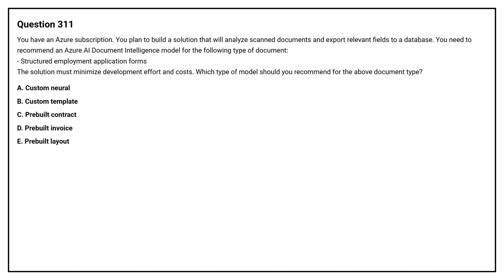Option A: Custom Neural. Option B: Custom Template. Option C: Pre-built Contract. Option D: Pre-built Invoice. Option E: Pre-built Layout. The correct answer is Option B: Custom Template.